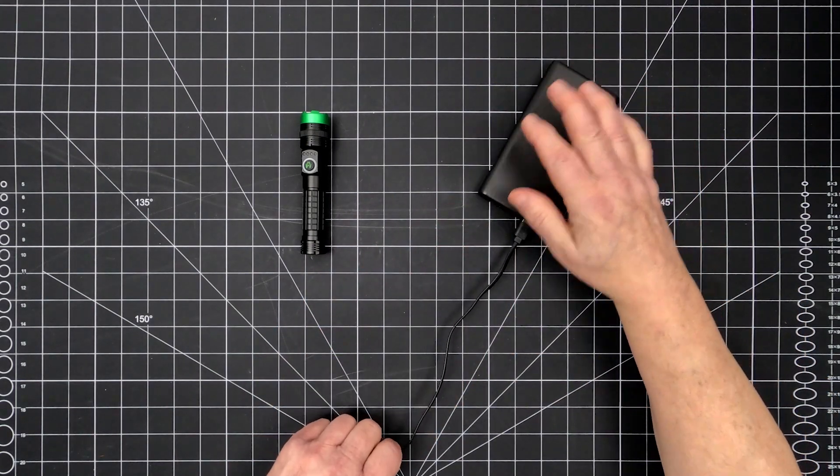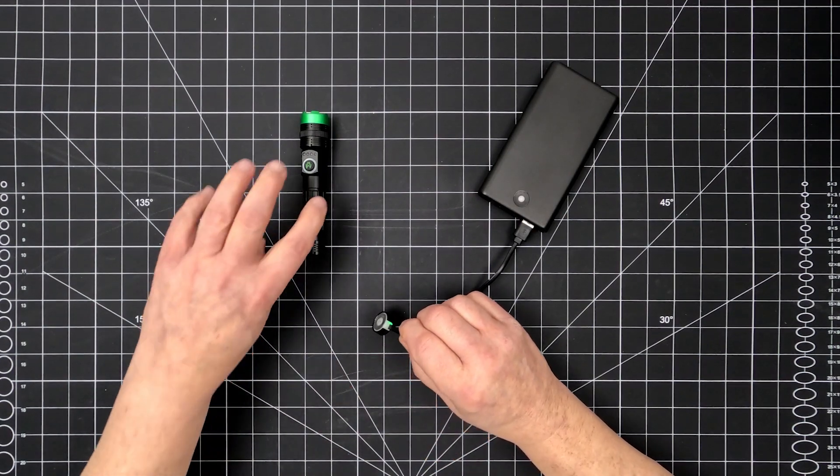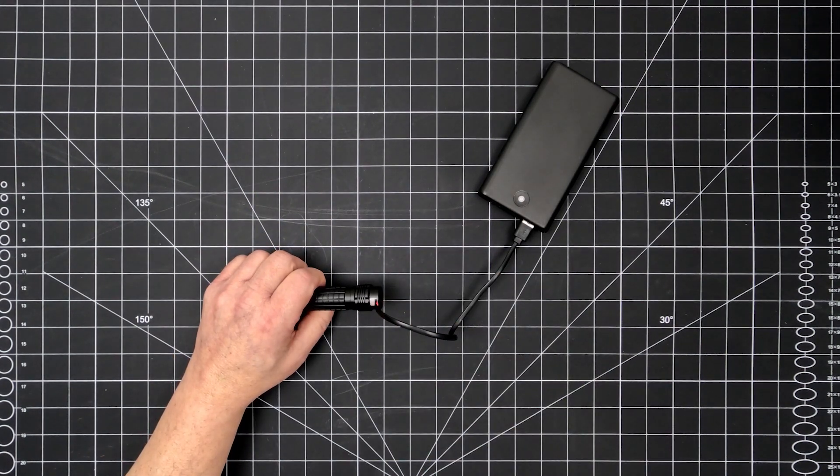To do so, plug the included charging cable into any USB power source, including car chargers, computers, or power banks. Magnetically attach the charging cable to the base of the flashlight.